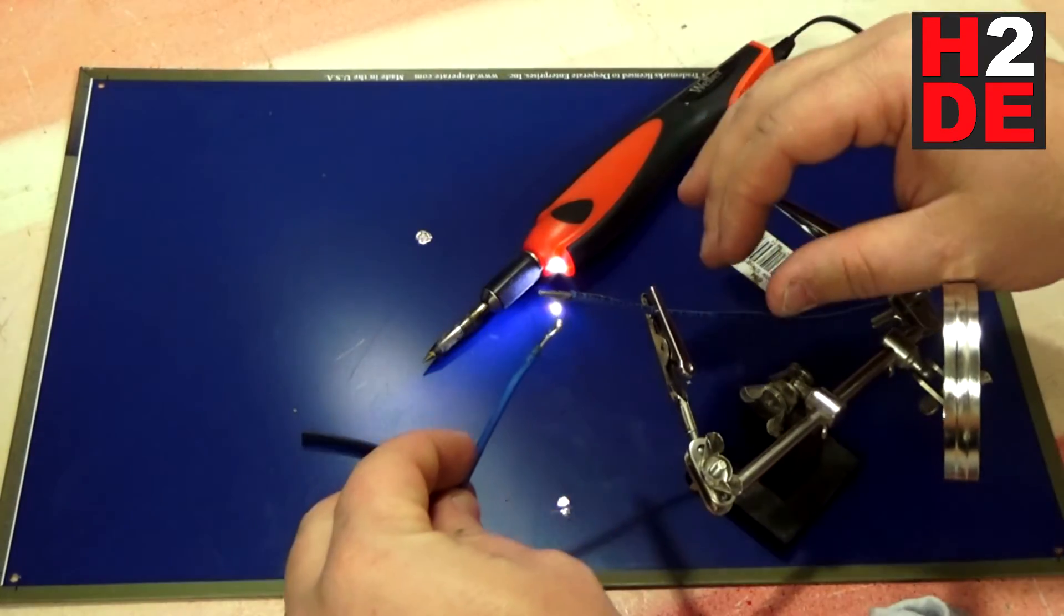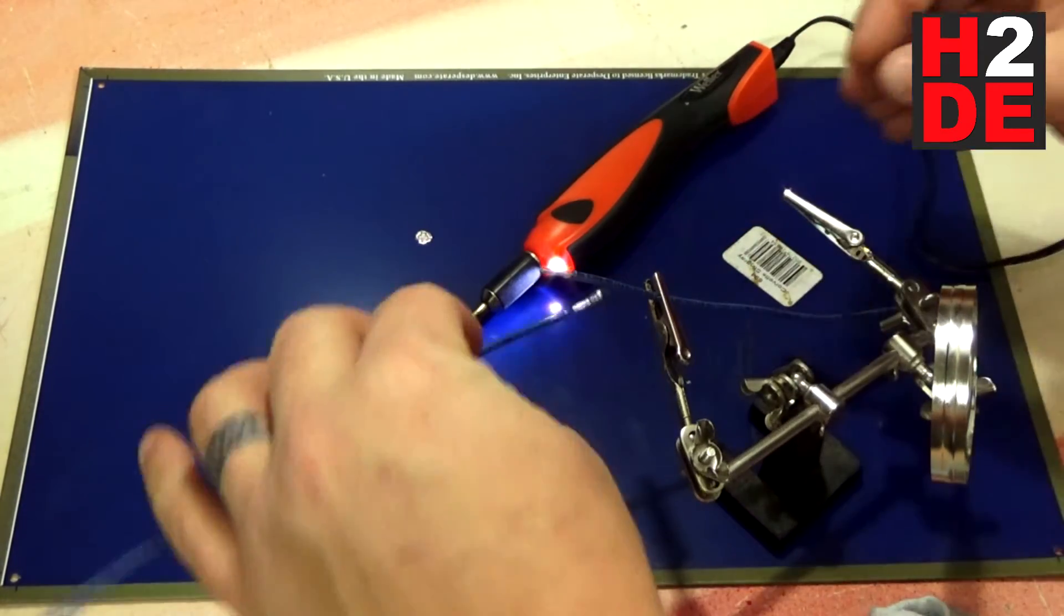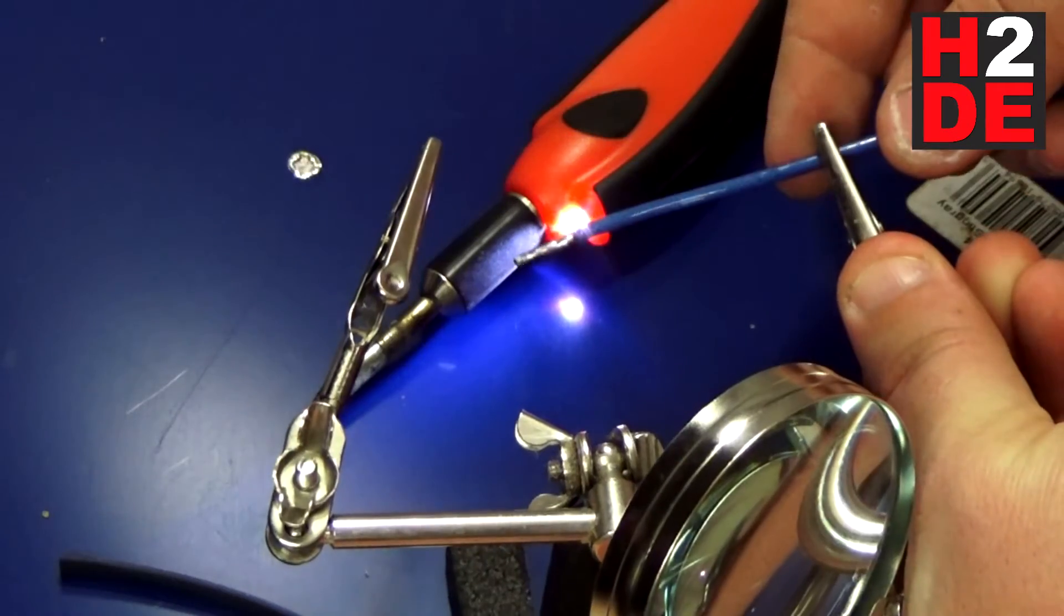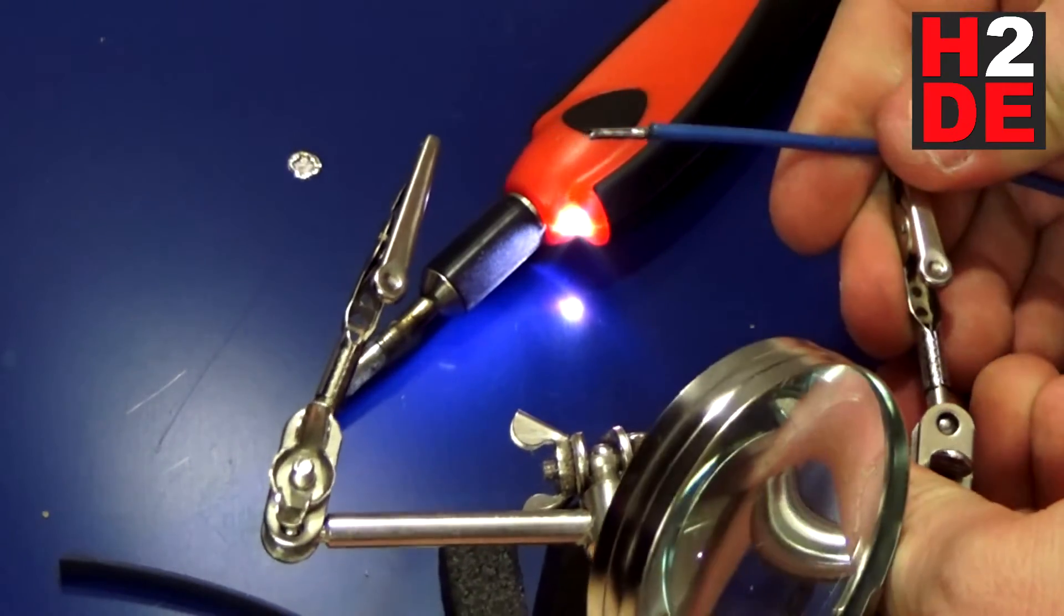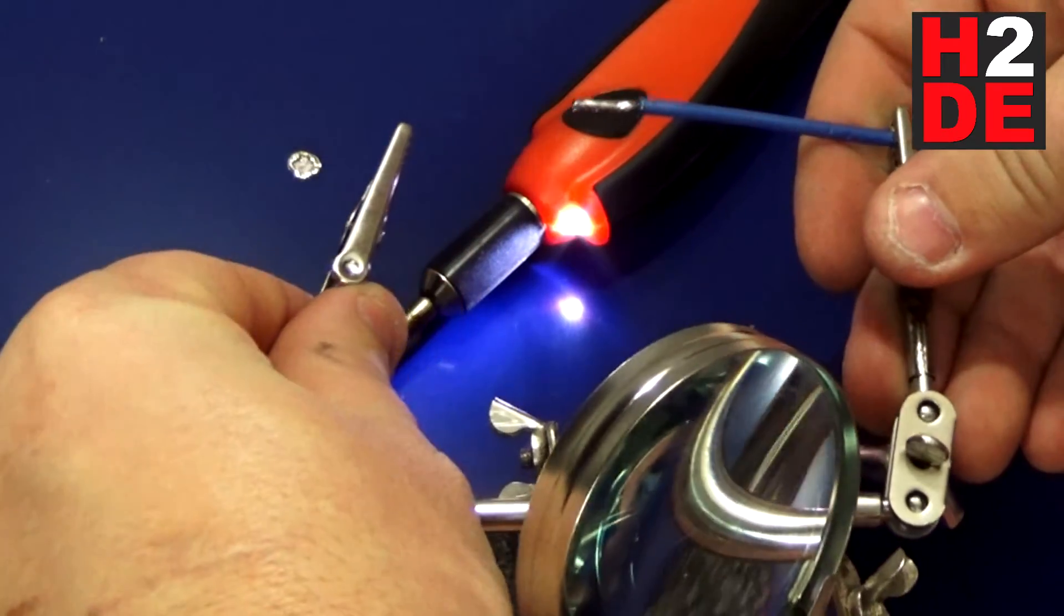Alright, so now we've got both pieces of wire tinned. We're going to go ahead and join them together. This is where the Helping Hands is going to come in handy here because we're going to position our wires over top of each other.